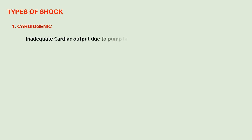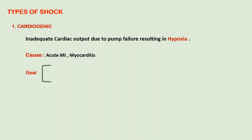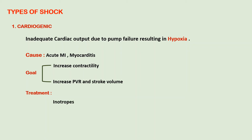The first type of shock is cardiogenic shock, caused by inadequate cardiac output due to pump failure, resulting in hypoxia. The main causes include acute myocardial infarction and myocarditis. The goal of therapy is to increase cardiac contractility and peripheral vascular resistance to increase stroke volume, using inotropes like cardiac glycosides, dopamine, dobutamine, cardiac beta-1 agonists, and thrombolytic agents like streptokinase.